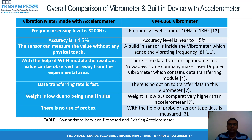The frequency sensing level of our vibrometer is 30–20 Hz. On the other hand, the frequency level is about 10 Hz to 1 kHz for VM6360. The accuracy of our vibration meter is ±4.5%, while the accuracy of VM6360 is near ±5%. The sensor in our vibrometer can measure values without any physical contact. With the help of the Wi-Fi module, the resultant value can be observed remotely from the experimental area, whereas there is no data transferring module in VM6360. Data transfer rate is fast in our vibration meter, while there is no option to transfer data in VM6360. Our vibration meter has low weight due to its small size, and there is no use of probes, whereas VM6360 uses probes for collecting data.